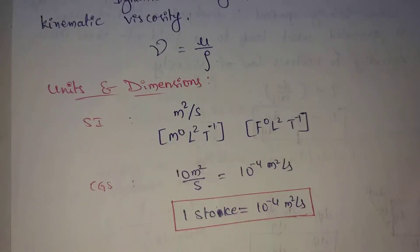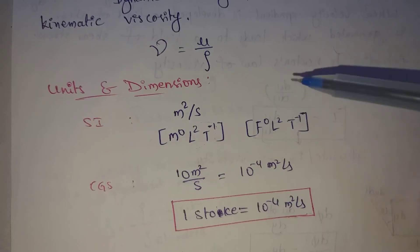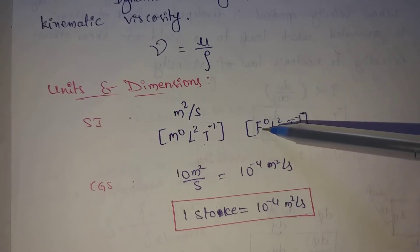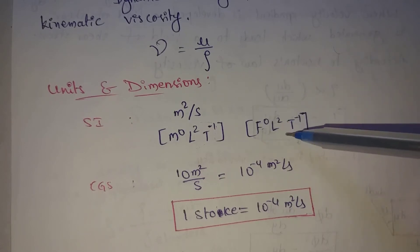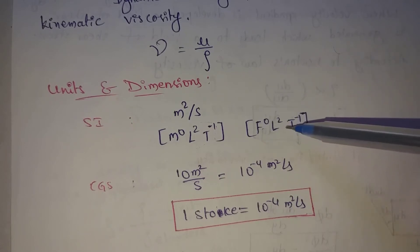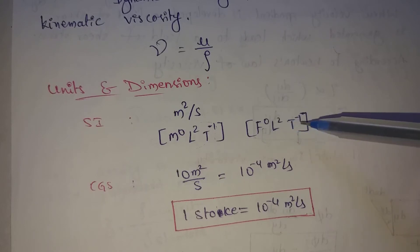So the dimension is L power 2, T power minus 1. That's why kinematic viscosity dimension is F power 0, L power 2, T power minus 1. This is the dimension.